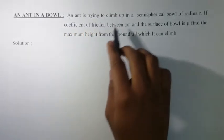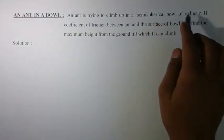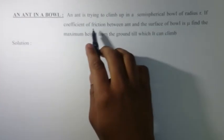Question is, an ant is trying to climb up in a semispherical bowl of radius r. If coefficient of friction between ant and the surface of bowl is mu, find the maximum height from the ground till which it can climb.